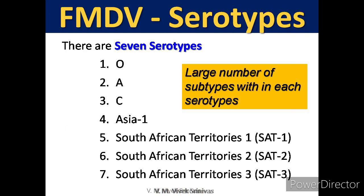There are 7 antigenically different serotypes of FMD virus worldwide: O, A, C, Asia 1, SAT1 (South African Territories 1), SAT2, and SAT3. Within each serotype, many subtypes exist.